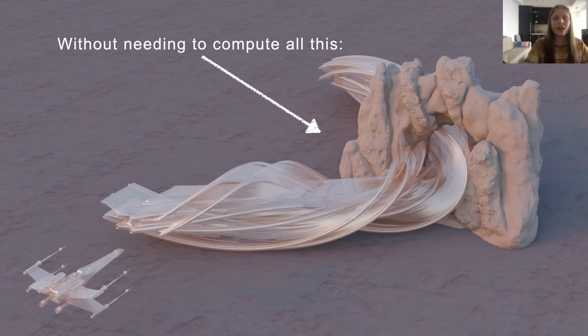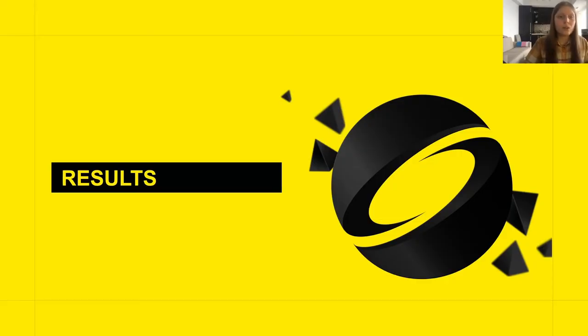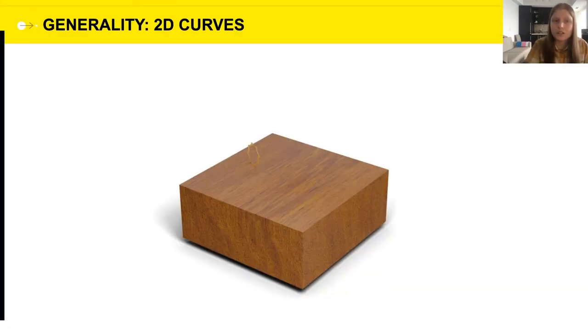Alright, so these are some of the nice and unique features of our algorithm, and the one I really want to hone into is its generality. Our algorithm can work on any rigid trajectory, and any input which accepts an implicit representation. So to end this talk, I want to guide you through some results that exemplify just this.